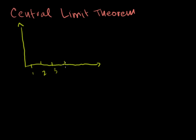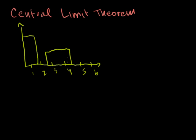So let's say I have a distribution that can take on values 1 through 6. It's some kind of crazy dice that's very likely to get a 1. It's impossible to get a 2. There's an OK likelihood of getting a 3 or a 4. It's impossible to get a 5, and it's very likely to get a 6. So that's my probability distribution function.